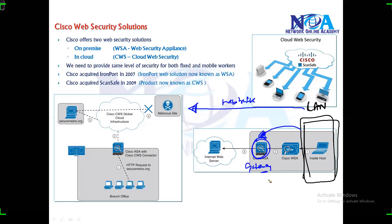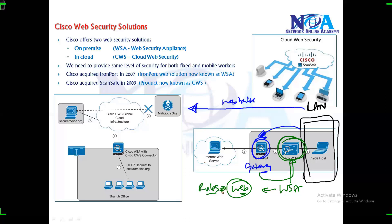We can configure the ASA to redirect the traffic, or we can have an inline WSA — a device that completely monitors your web traffic. Depending upon the policies and rules configured, traffic will be allowed or blocked. We can filter URLs, for example blocking specific social networking sites. This is what we call on-premises web security — providing web security to your network present within your company.